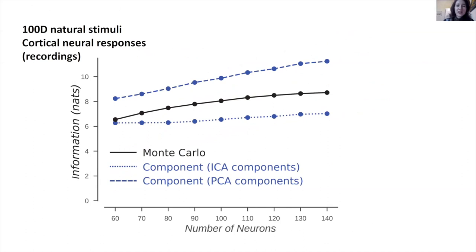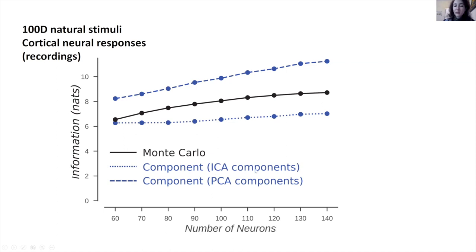A cautionary finding: for natural stimuli in 100 dimensions — a 10×10 frame — we can only compute either Monte Carlo or the component independent approximation. The components need to be independent. Taking independent components captures a good fraction of the full information. But if you take PCA components that are not independent, you can get a result that exceeds the true information. So for the component independent approximation, the components must be independent.